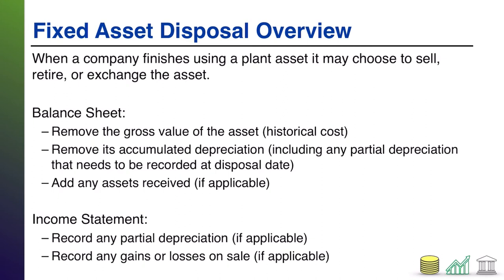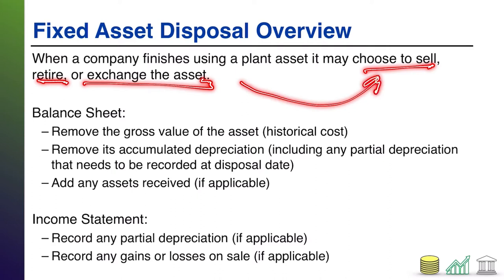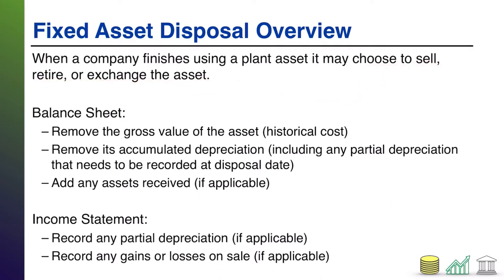There are basically three options that a company has when it decides it no longer needs a fixed asset. One, it may sell the asset. Two, it may retire the asset. Or three, it might exchange the asset, which is really just another version of selling. So at the end of the day, this is really like two and a half ways of doing it.